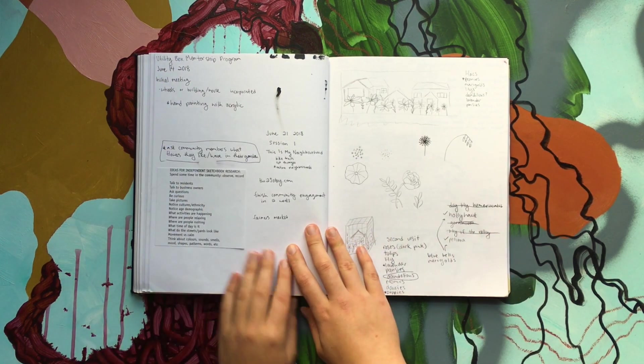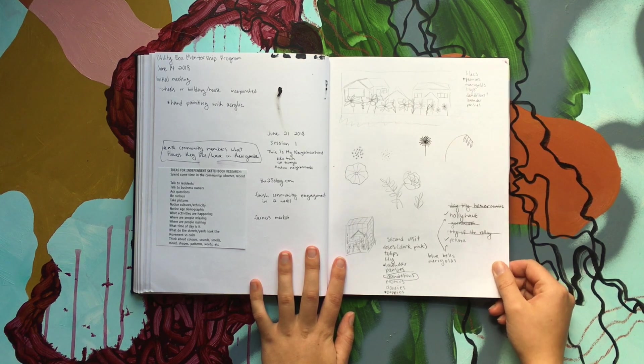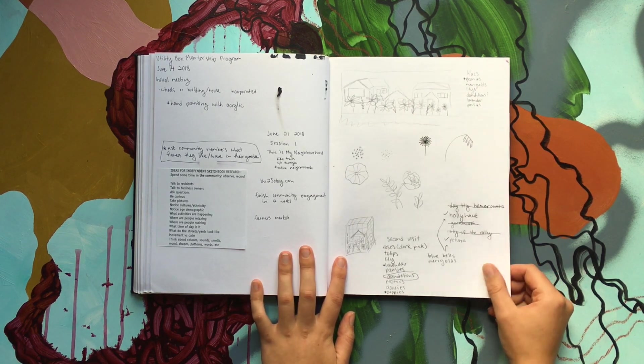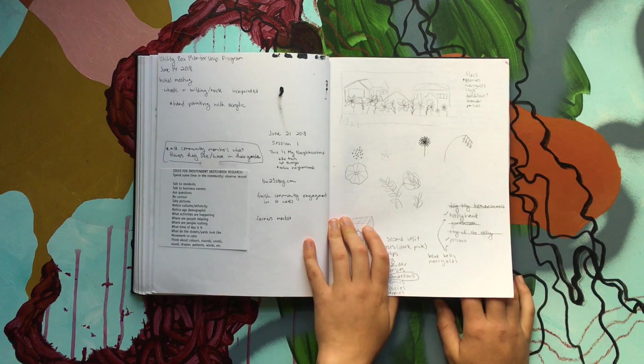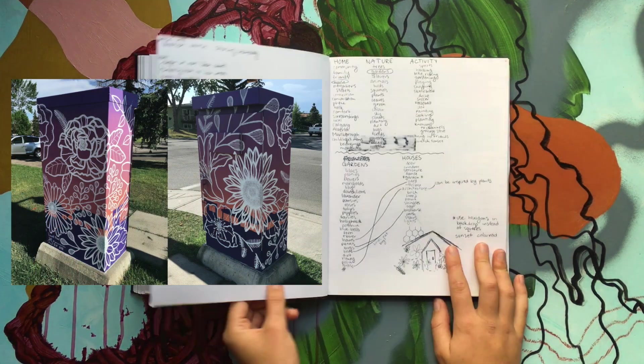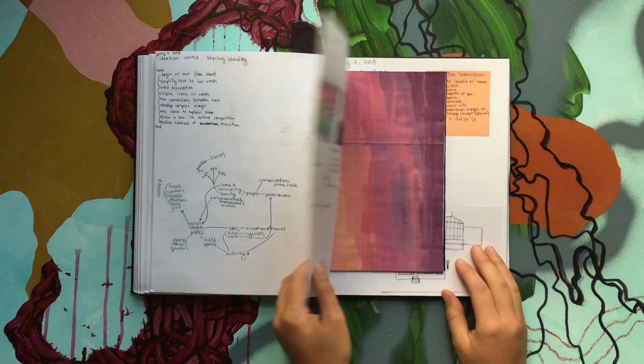And then I got accepted into the utility box mentorship program through the city of Calgary. That was fun. I got to paint a utility box. I'll put a photo here, but this is, I was figuring out kind of what I was going to do, writing down some stuff.